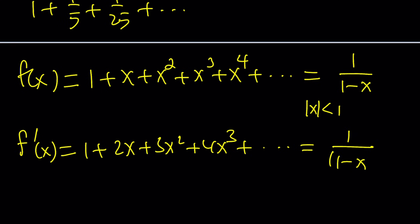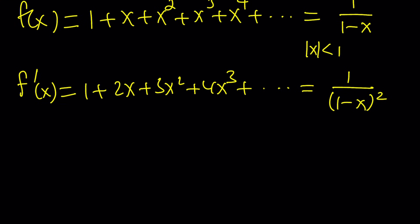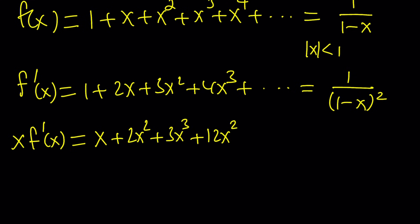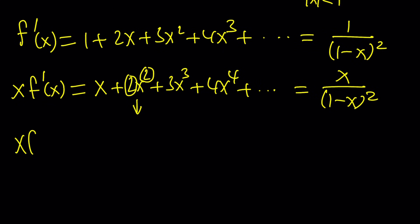You've probably seen this before. Now the next step: instead of differentiating again, I'm going to multiply f prime by x, so every term is multiplied by x. That gives x plus 2x squared plus 3x cubed plus 4x to the fourth, and so on. Notice that when we differentiate this, the exponent and the coefficient will be multiplied and they are the same, giving us perfect squares. So let's go ahead and differentiate this product — it's important to stick to the notation because we'll use it at the very end.